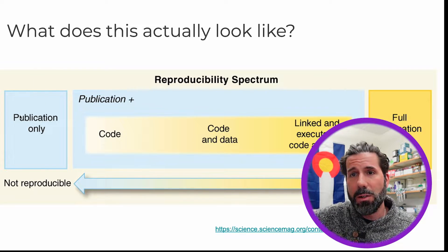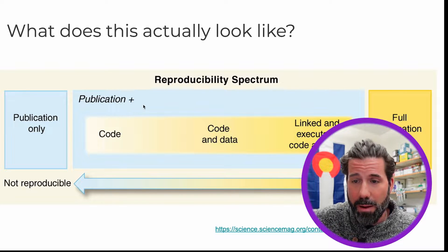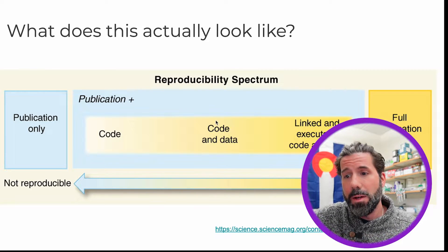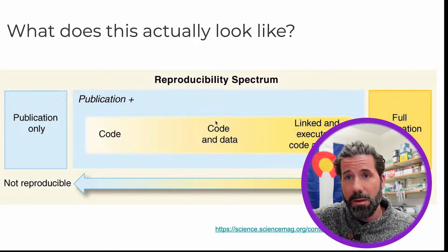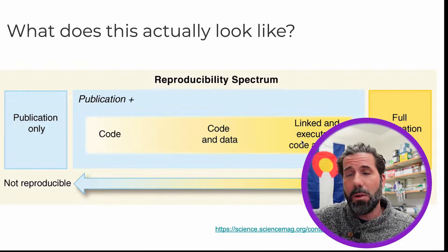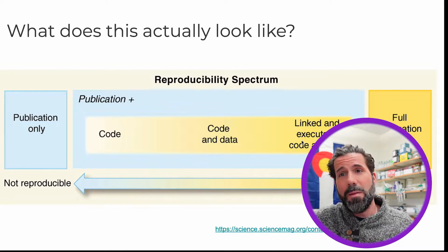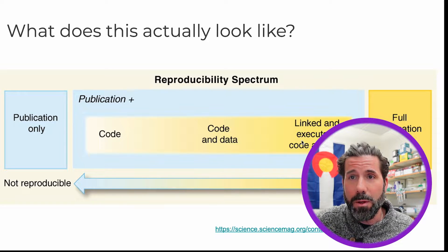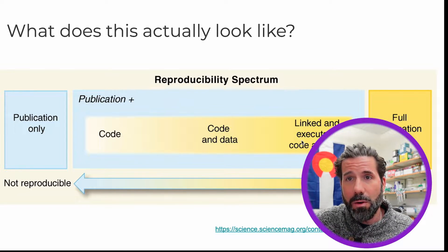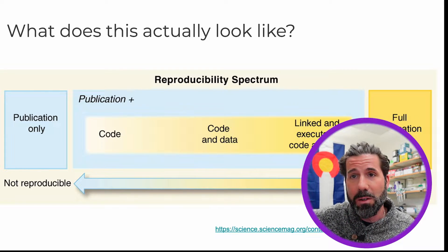So let's say we start with a publication and we want to reproduce it. First we'd go to the code — that'd probably be on GitHub. Hopefully it's well written and well organized; we're going to practice the best practices of that. Then you need the code and the data, stored in some public repository. But then you need all the linked executable code and data — all those dependencies that depend on other things. Make a container, put all the software in it, use Nextflow to manage all those tasks, and get full replication, which is the gold standard.